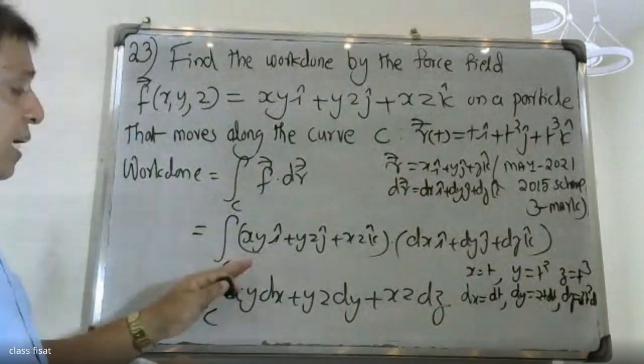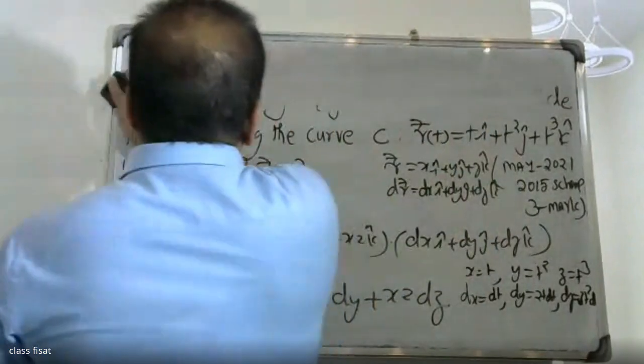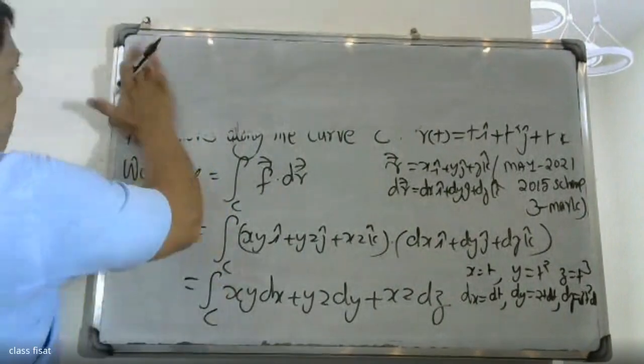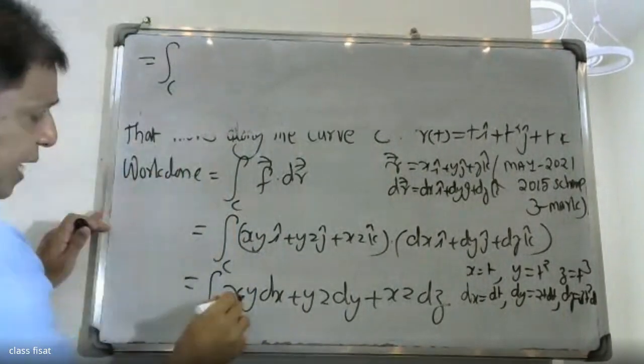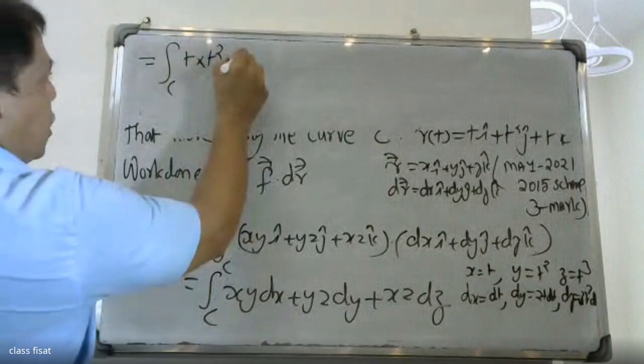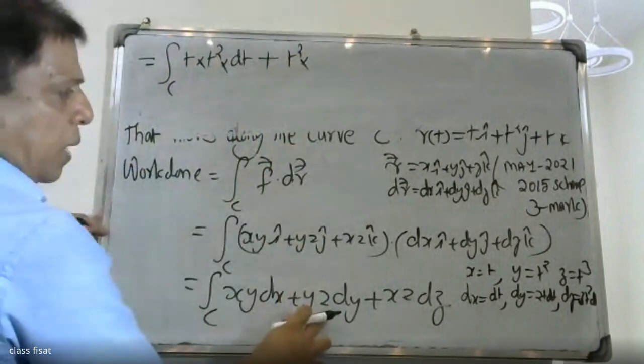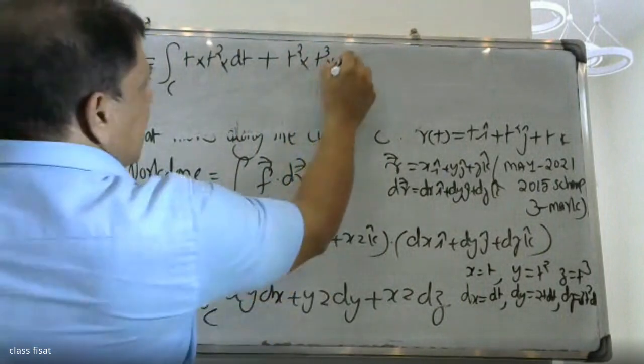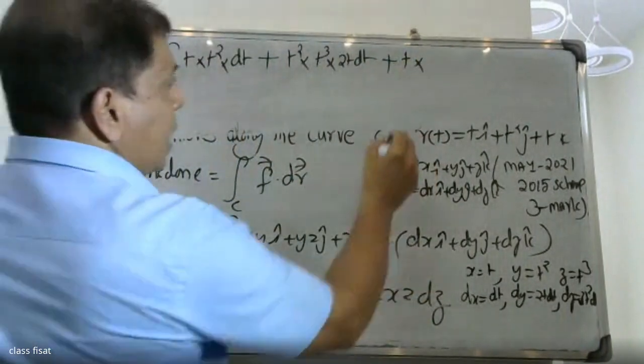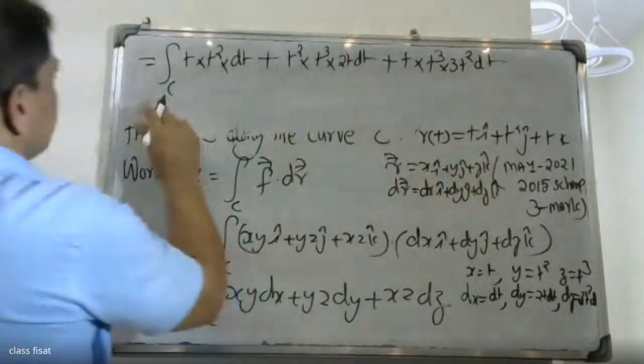If we substitute these values into the integral, we will get the answer. Let me do the procedure. Here, the integral over C becomes: xy dx, which is t times t² times dt, plus yz dy, which is t² times t³ times 2t dt, plus xz dz, which is t times t³ times 3t² dt.